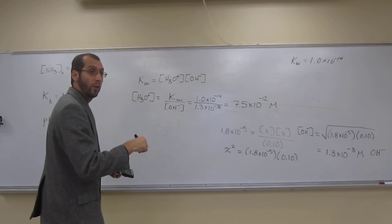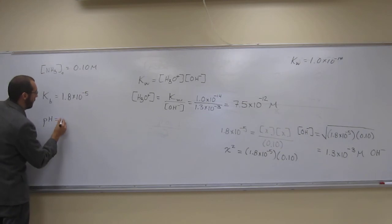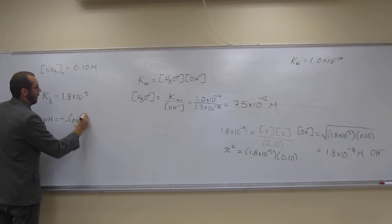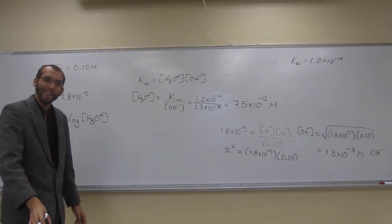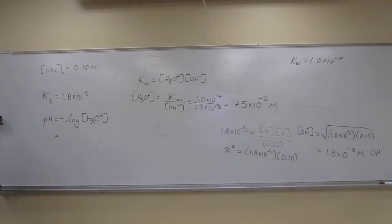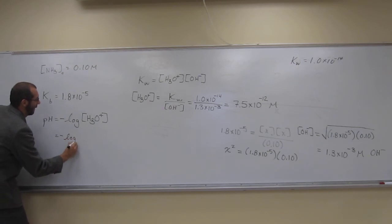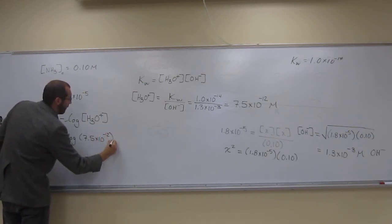So from that, we should be able to figure out the pH, right? Because the pH, remember, is what? You're going to help me out? What's the pH? Negative log of the, come on guys, hydronium ion concentration. Yeah, it's easy when you write it out. So what is it going to be? We're going to say the negative log times 7.5 times 10 to the negative 12.